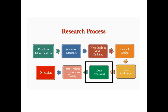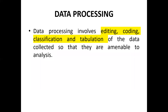In previous lectures, we discussed the research process and its different stages. One of these stages is data processing. Once you collect the data, you have to do data processing. Data processing involves editing, coding, classification, and tabulation — four processes which prepare the data so that they are amenable to analysis.